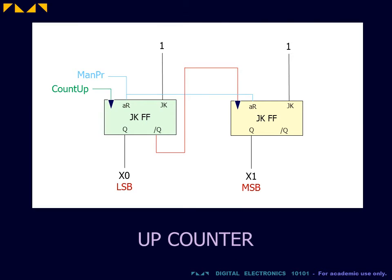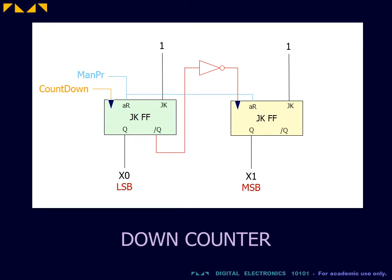For the up counter, the clock triggered to the second flip-flop was fed from the Q-bar output of the first flip-flop. For the down counter, we simply placed an inverter on this line.